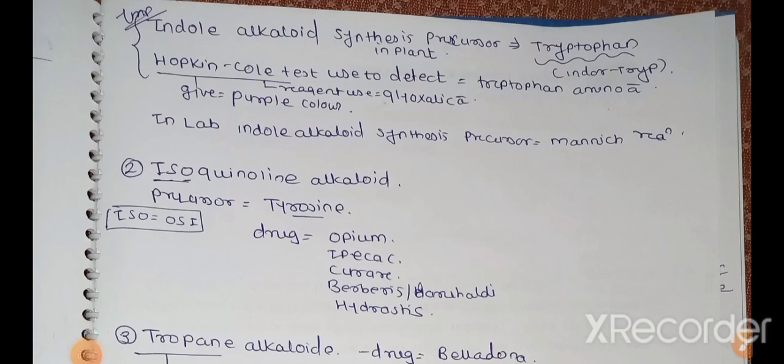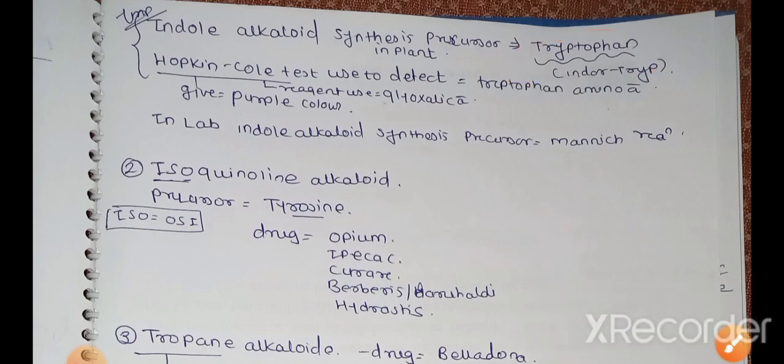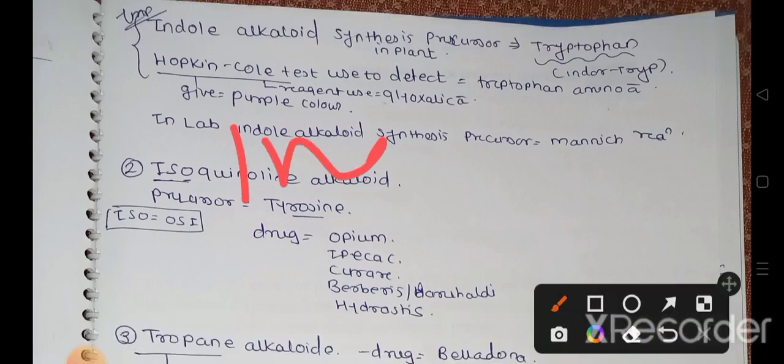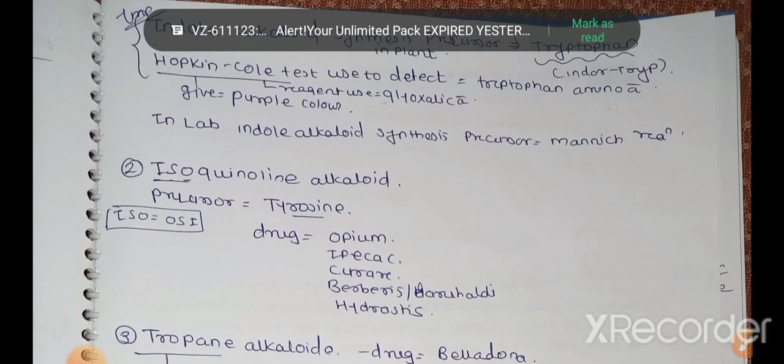After this, indole alkaloids - which is the precursor in the plant? Means the plant has indole alkaloids present, so for this synthesis the precursor used is tryptophan. Tryptophan is one of the amino acids which is used as a precursor for the synthesis of indole alkaloids in the plant. So you can remember this: indole alkaloids went to trip - tryptophan is for indole alkaloids. After that, Hopkins cold test is used for detection of tryptophan amino acids.